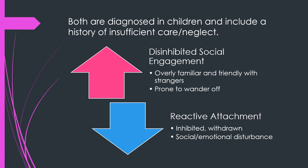Two related childhood disorders are sort of opposites. Both are diagnosed in childhood and both include a history of insufficient care or neglect. Disinhibited social engagement disorder involves a child being overly familiar or friendly with strangers and prone to wander off with random people. Reactive attachment disorder is the opposite — more inhibited and withdrawn, with possible social or emotional disturbances.